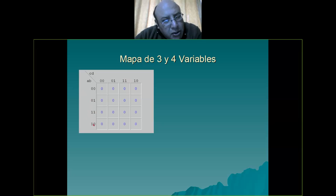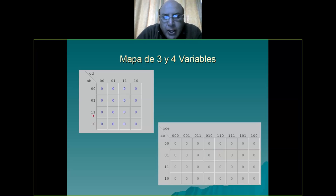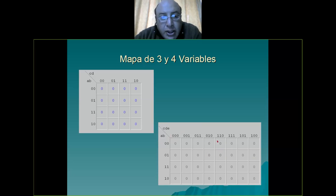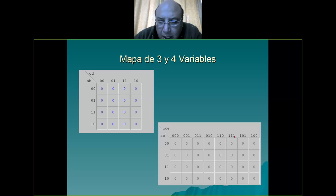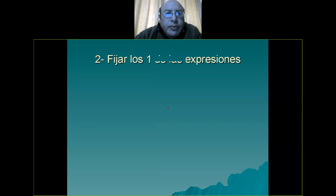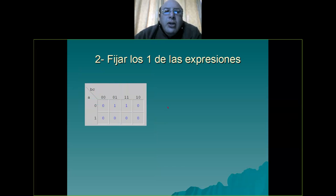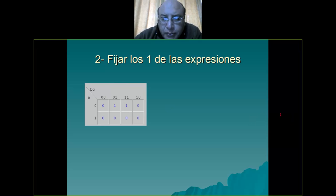Para cinco variables: 0, 0, 0, 1, 1, 1, 1, 0. Esta última — cuando es tres variables igual, solamente que el que debería estar al último nos recorremos dos posiciones. Entonces, lo que habíamos visto es que primero tenemos que fijar cuáles son los unos. Aquí uno, y aquí uno. Esos son los que juegan.